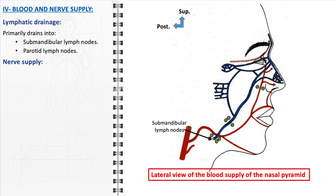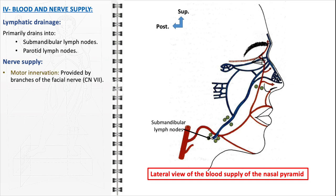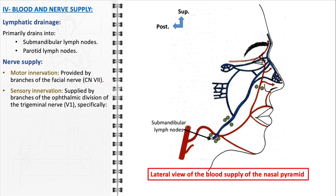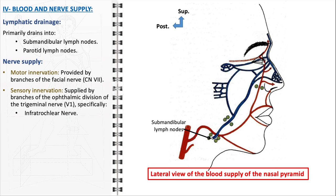The nerve supply to the nose is essential for its sensory and motor functions. Motor innervation is provided by branches of the facial nerve, responsible for controlling movements of the external nasal muscles, contributing to facial expressions and adjustments in the shape of the nostrils. The sensory innervation is primarily supplied by branches of the ophthalmic division of the trigeminal nerve. Key sensory nerves include the infratrochlear nerve, providing sensation near the bridge of the nose, and the anterior ethmoidal nerve, which supplies sensation to the upper part of the nasal cavity and is crucial for reflexes like sneezing and the perception of irritants.